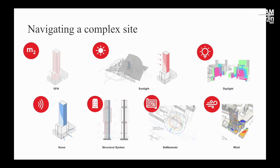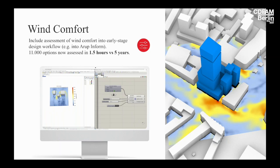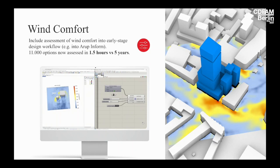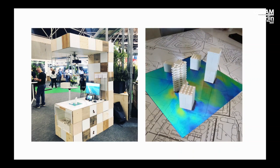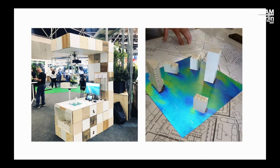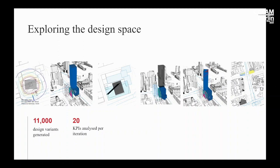We also did wind comfort studies, and on this topic we've been doing research for the past three years to speed up our calculations — a CFD model for one of these projects would take about four hours per model. So we developed a machine learning algorithm to quickly assess wind comfort when positioning buildings in an urban environment. We could predict wind comfort for 11,000 options in one and a half hours versus what would otherwise take five years. At a fair we also built some Lego buildings where people could see the effect of positioning different buildings and heights on wind comfort.